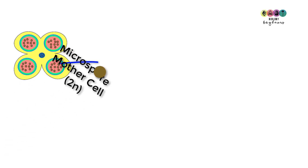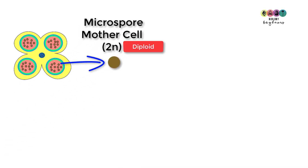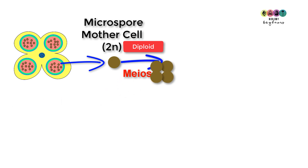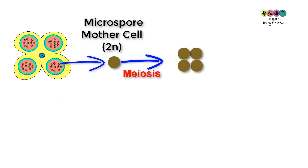Inside each of the pollen sacks are microspore mother cells — these diploid cells — and these will undergo meiosis to produce four haploid cells called microspores. Initially those four haploid microspores are connected together in a structure known as a tetrad.